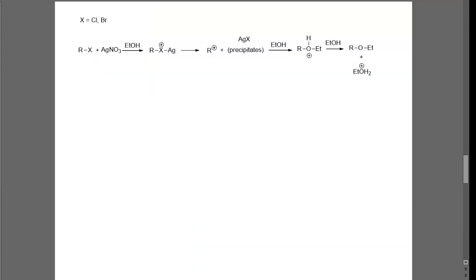Let's talk about the specific mechanism for the SN1 reaction. This is a little different than what you've seen in your text, because in your text you don't usually see something assisting the leaving group leave. Usually the leaving group just leaves, which is certainly possible for several of these compounds. The most important thing, and the reason why we use this, is because once our leaving group left, it was bound to silver.